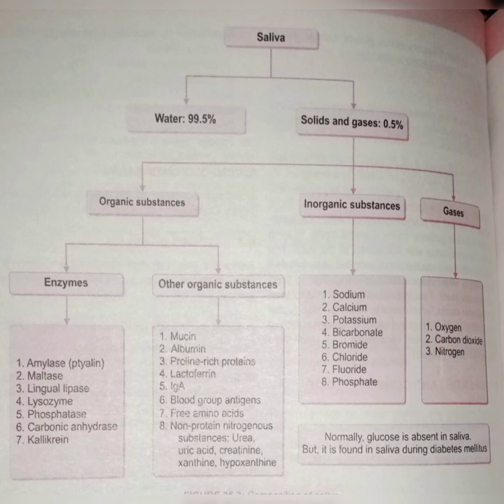Organic substances in saliva include mucin, albumin, proline-rich protein, lactoferrin, IgA, blood group antigens, free amino acids, and non-proteinous nitrogenous substances such as urea, uric acid, and creatinine. The enzymes present are amylase, maltase, lingual lipase, lysozyme, phosphatase, carbonic anhydrase, and kallikrein. These are the secretions especially concerned with enzyme activity and form very important components of saliva.